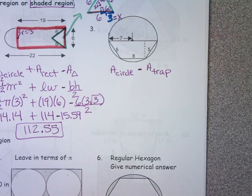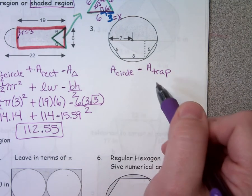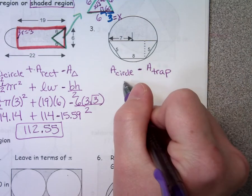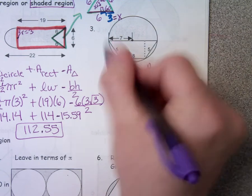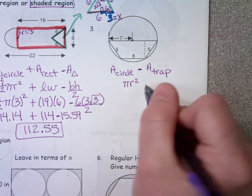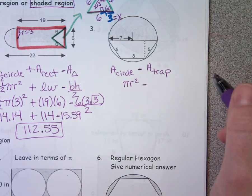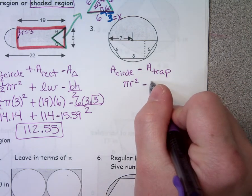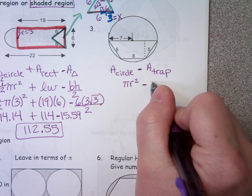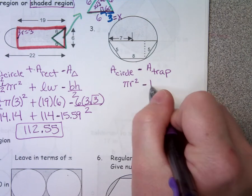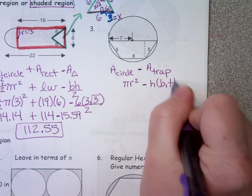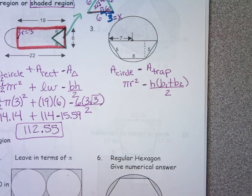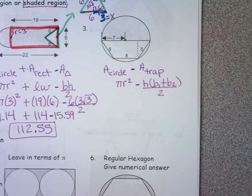Let's write down formulas. What's our formula for area of a circle? Pi r squared. This is a full circle so I don't have to do half this time. Minus — what's our formula for area of a trapezoid? We add the bases, times by the height, and divide by two. So there are the formulas, and now I'm going to plug everything in.